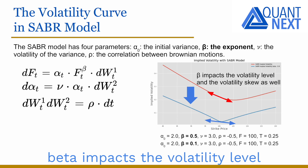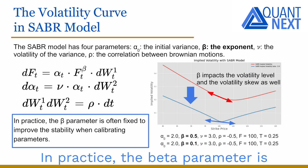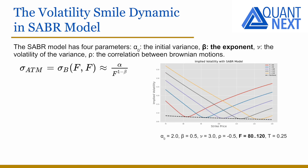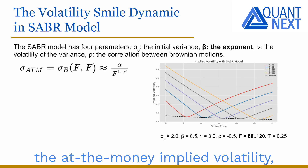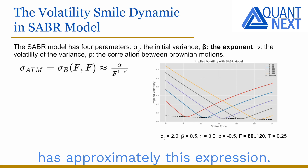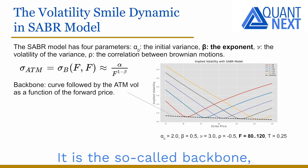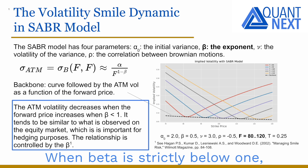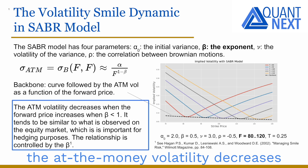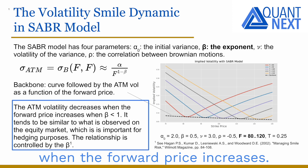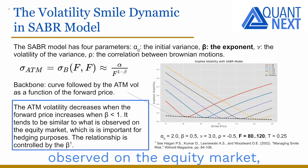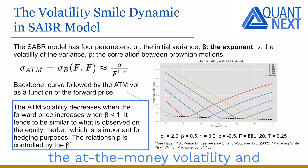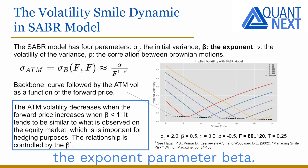Beta impacts the volatility level and the volatility skew as well. In practice, the beta parameter is often fixed to improve stability when calibrating parameters. In the SABR model, the at-the-money implied volatility, when K equals F, has approximately this expression — the so-called backbone, the curve followed by the at-the-money volatility as a function of the forward price. When beta is strictly below 1, the at-the-money volatility decreases when the forward price increases. It tends to be similar to what is observed on the equity market, which is important for hedging purposes. This relationship between the at-the-money volatility and the forward price is controlled by the exponent parameter beta.